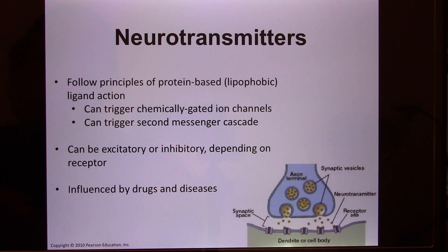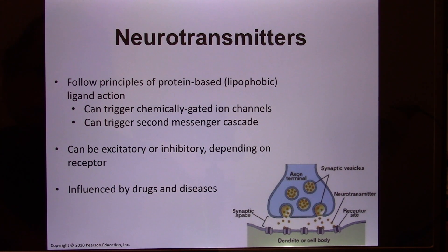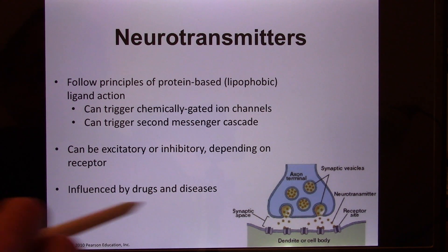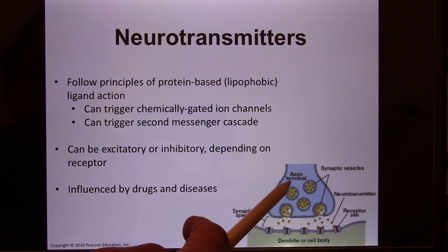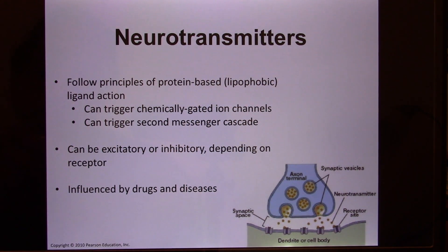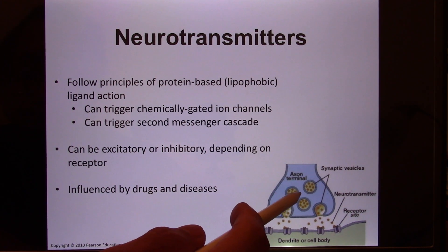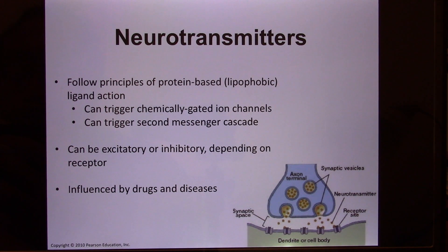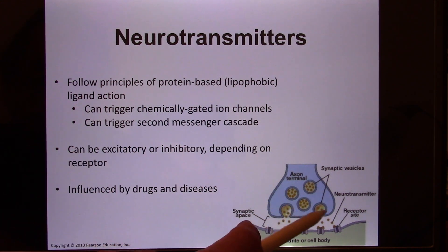In the synapse area, there is neurotransmitter release, and this is a big topic for pharmaceutical companies. A lot of diseases happen because of neurotransmitters. These neurotransmitters can be packed in vesicles ready to be released — they are lipophobic, not steroids, because steroids could not be packed there. So far we've found 12 different kinds of neurotransmitters, and every few years they find a new one. We're going to talk about a few of them.